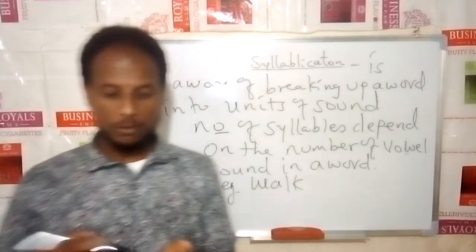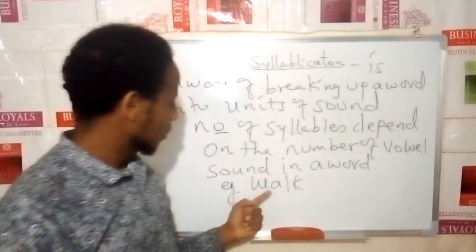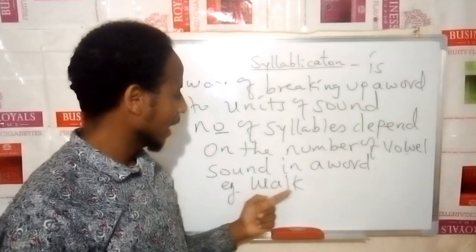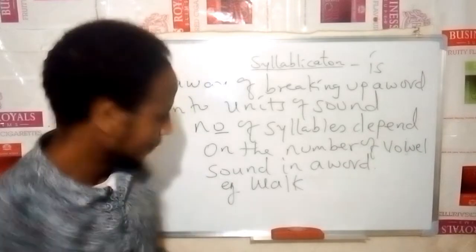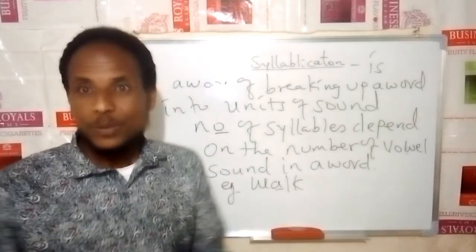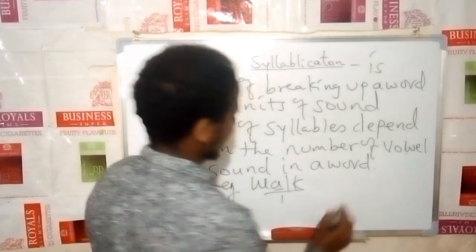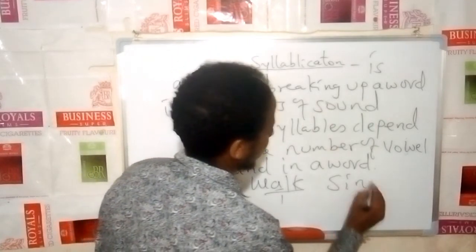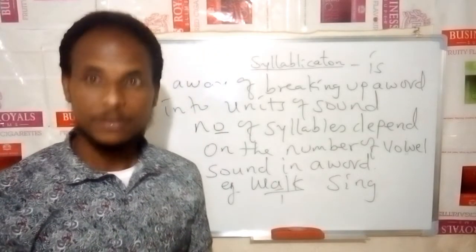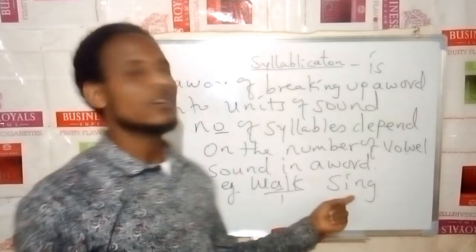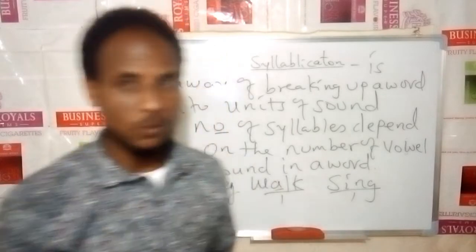Let's count the number of vowel sounds in the word 'walk': W-A-L-K. There is only one vowel sound, A, so the word is monosyllabic. What about 'sing'? The word 'sing' also has only one vowel sound, so it is monosyllabic — a one-syllable word.